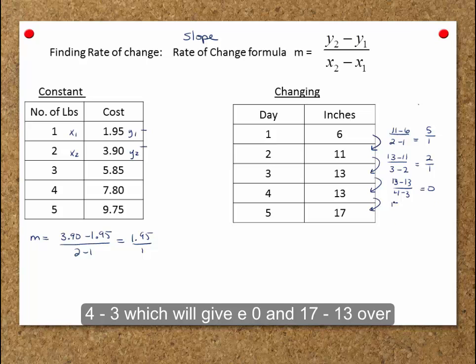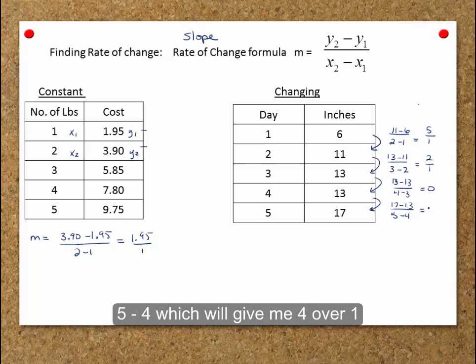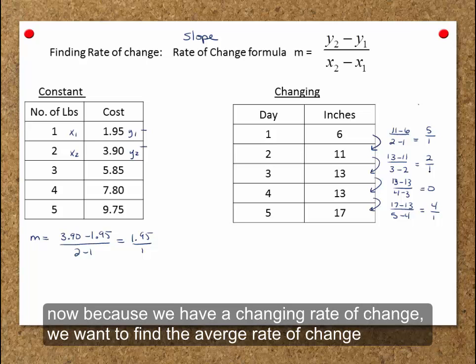And 17 minus 13 over 5 minus 4, which will give me 4 over 1. Now because we have a changing rate of change, we want to find the average rate of change.